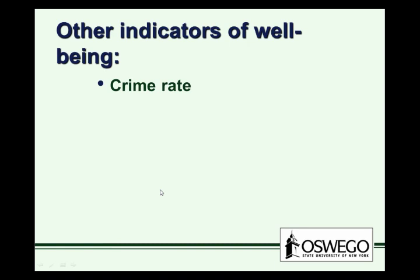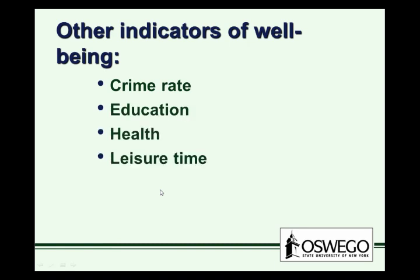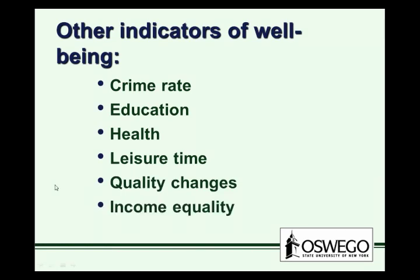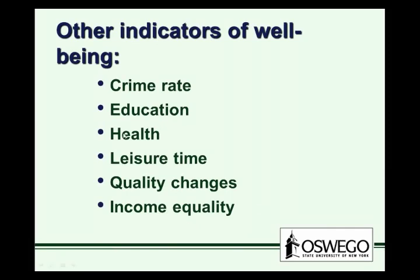Other indicators of well-being include crime rates, education, health, leisure time, and quality changes — those things aren't necessarily factored into GDP. Income equality might not be factored in either. For example, the U.S. has the largest gross domestic product in the world, but in terms of health, we don't have the highest life expectancy, and our infant mortality rate is higher than countries with lower GDP. So in some measures of well-being, we're not at the top of the list.